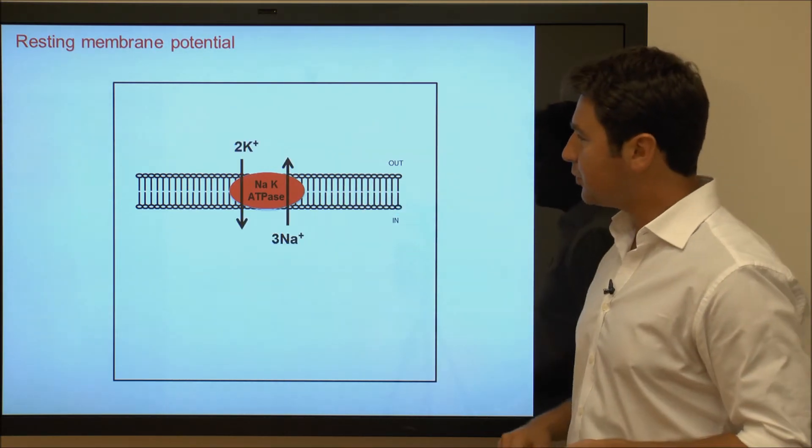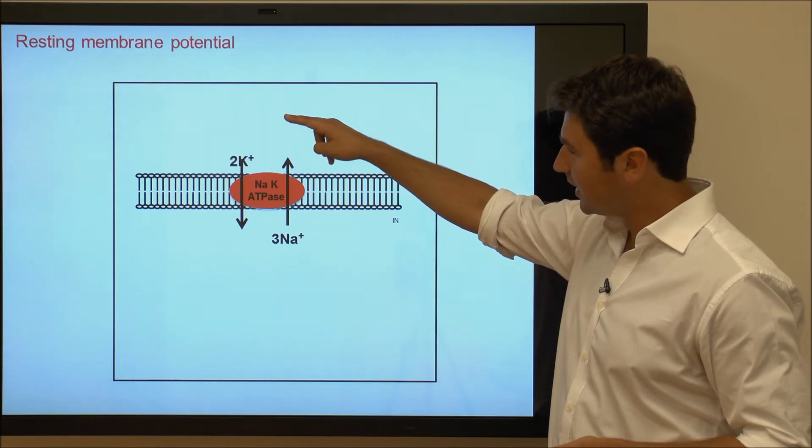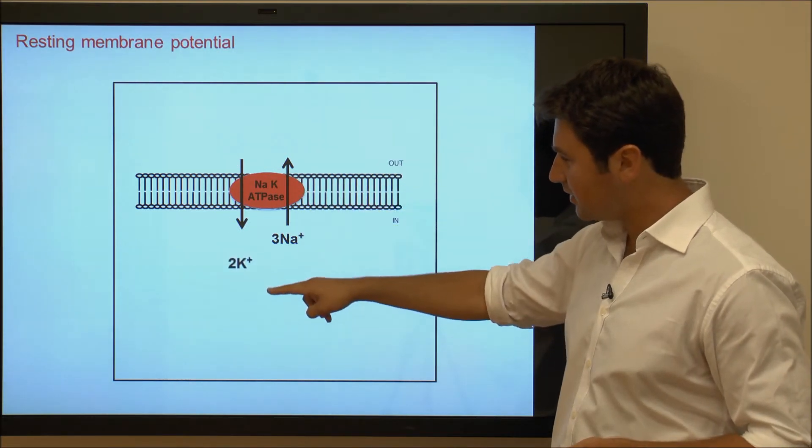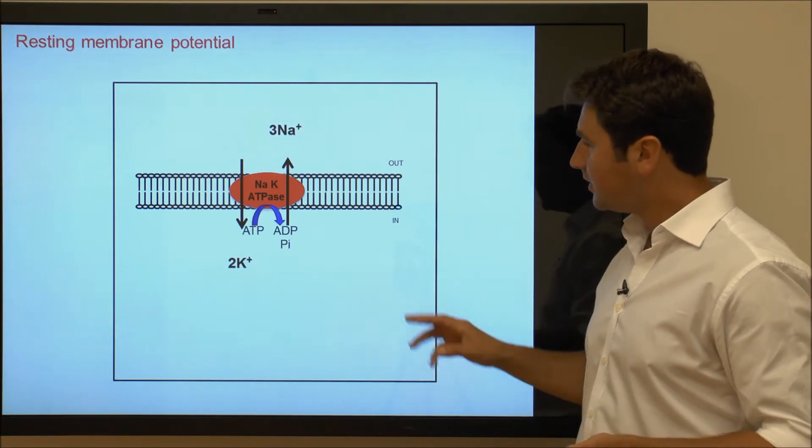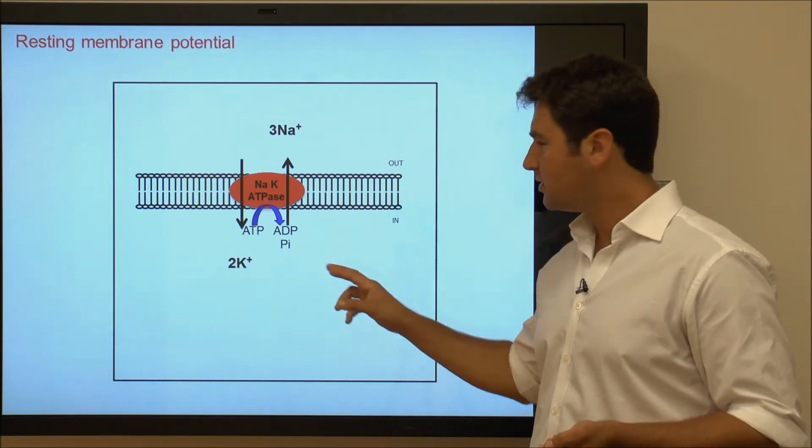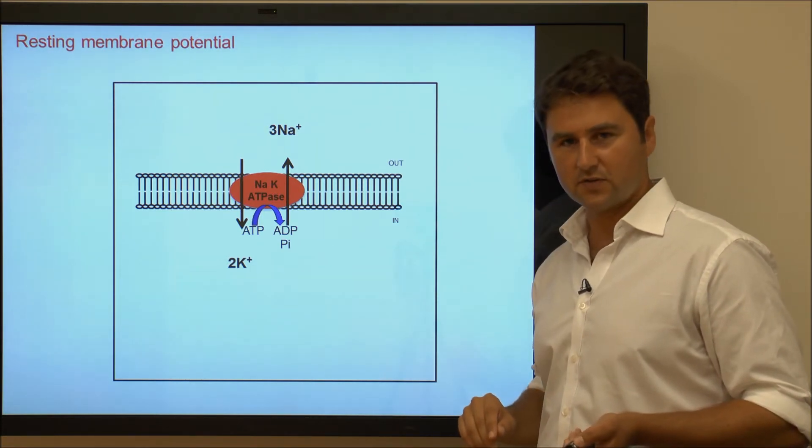The sodium pump transports two potassiums from the outside of the cell to the inside of the cell in exchange for three sodiums. This is an energy-dependent process requiring the breakdown of ATP into ADP and inorganic phosphates.